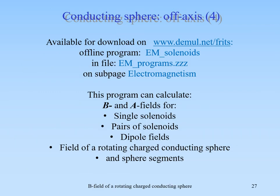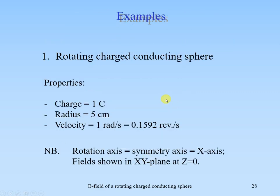We took a numerical approach using a computer program available for free download: the offline program EM Solenoids, found on the electromagnetism subpage of this website. That program can calculate the B field, E fields, and A fields for a single solenoid, pairs of solenoids like Helmholtz pairs, dipole fields, and the field of a sphere and sphere segments. The first example is a rotating charged conducting sphere with charge 1 Coulomb, radius 5 cm, and a velocity of 1 radian per second. The rotation axis is the x-axis and we show the field in the xy-plane at z = 0.